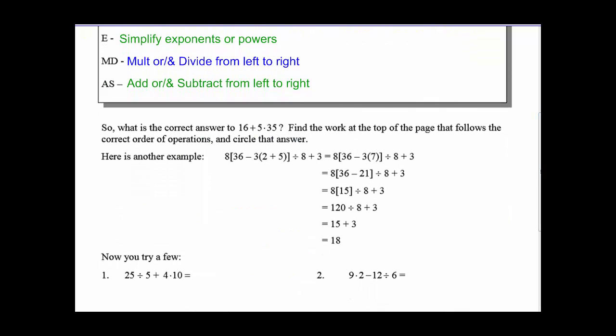Another example. If we have 8 times, and then inside the parentheses, we have 36 minus 3 times another set of parentheses, 2 plus 5 in parentheses, divided by 8 plus 3. Remember, order of operations says we're going to do parentheses. So the furthest inside the parentheses, because we have two sets here, is the 2 plus 5. So we're going to have to do 2 plus 5 to get 7.